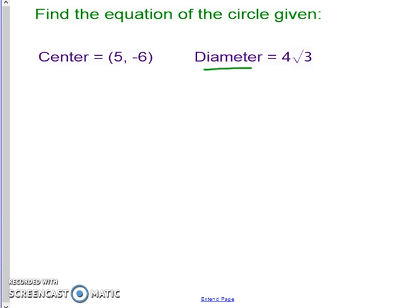Well, we need to know the relationship of the diameter and the radius because the circle formula is the quantity x minus h squared plus the quantity y minus k squared equals r squared.